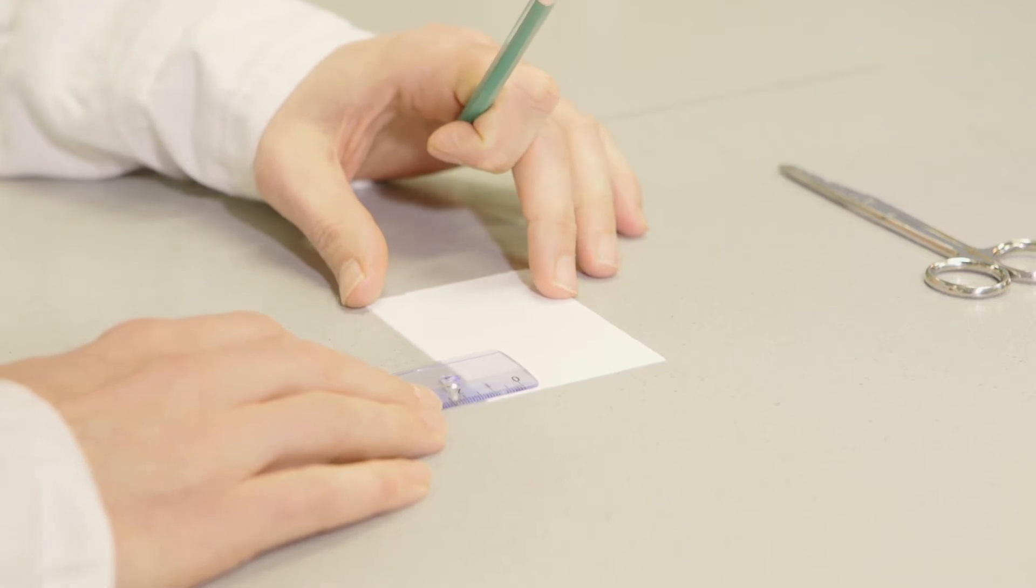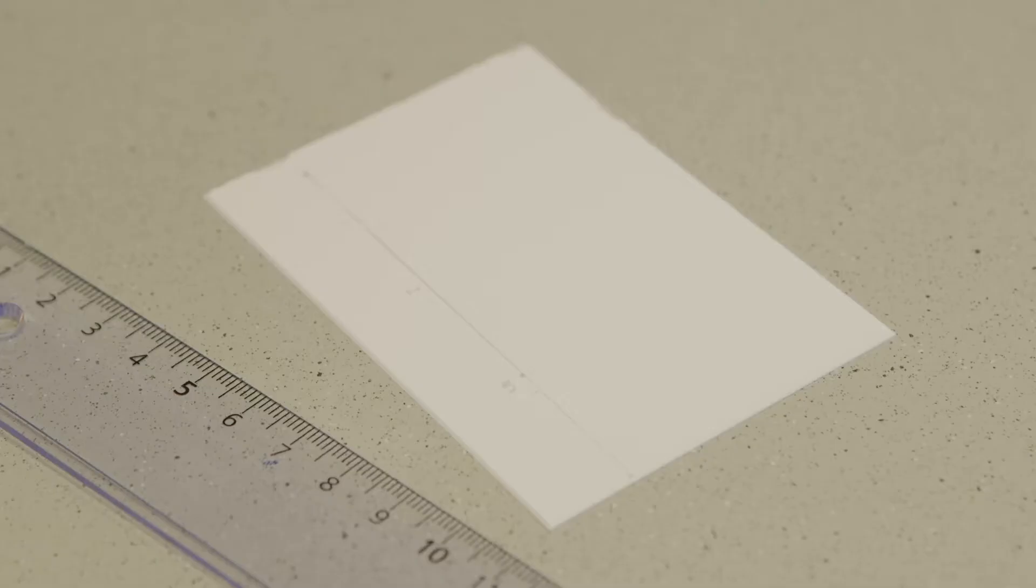A very thin line is drawn on the TLC plate 1.5 cm from the bottom edge with a soft pencil. The layer must not be damaged.